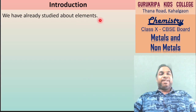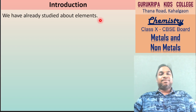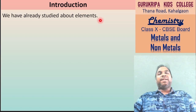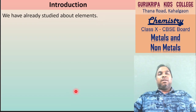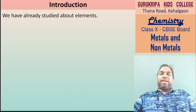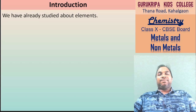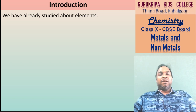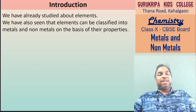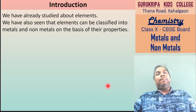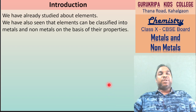Elements के बारे में हम लोग already पढ़ चुके हैं. क्या होते हैं elements? जिस चीज के atoms मिलते हैं. Elements या तो Metal हो सकते हैं, या Non-Metal हो सकते हैं. Properties के आधार पे Metal और Non-Metal में classify कर सकते हैं elements को.